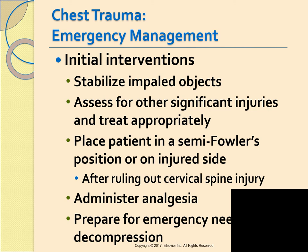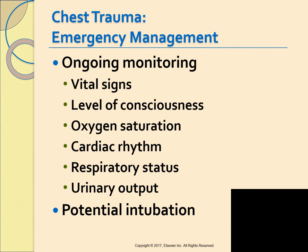Additional initial interventions: stabilize any impaled objects with a bulky dressing but don't remove them. Assess for other significant injuries and treat appropriately. Position the patient in semi-Fowler's or on the injured side if breathing is easier, after ruling out cervical spine injury. Administer small amounts of analgesia for pain to help with breathing. Prepare for emergency needle decompression if tension pneumothorax or cardiac tamponade is suspected. Monitor vital signs, level of consciousness, O2 saturation, cardiac rhythm, and urinary output. Anticipate possible intubation, and release the dressing if a tension pneumothorax develops — if the dressing is too tight on a sucking chest wound, a tension pneumothorax will occur.